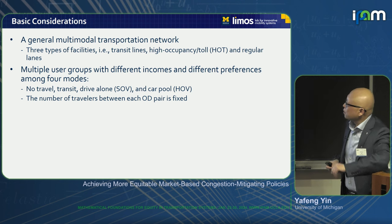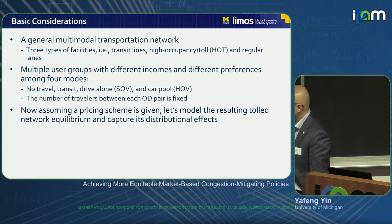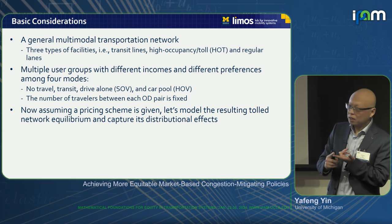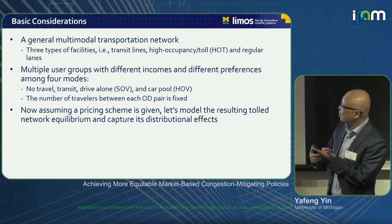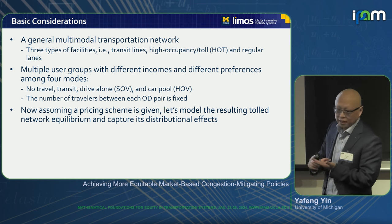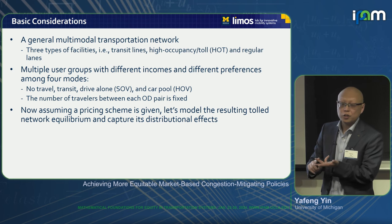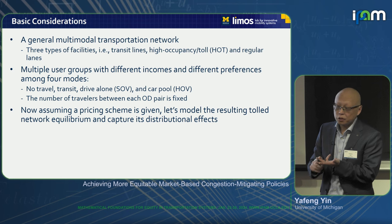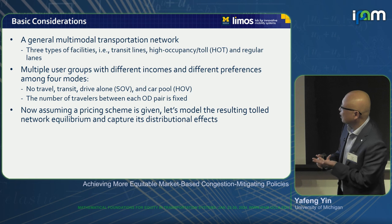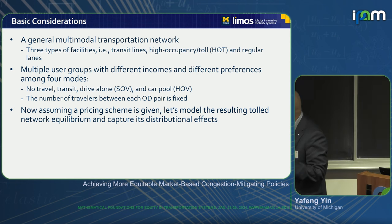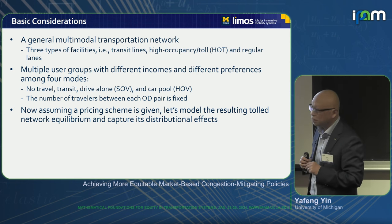Now let's assume we have a pricing scheme. By pricing scheme, I mean you can charge on regular highway, you can charge different prices for single-occupancy vehicles and high-occupancy vehicles on HOT lanes, and you can make adjustments — positive or negative — to transit fares. Negative means you subsidize transit. Given such a pricing scheme, we want to model the resulting tolled network equilibrium, which also captures the distributional effect. Because transit travel time and highway travel time are both flow-dependent, we look at network equilibrium.